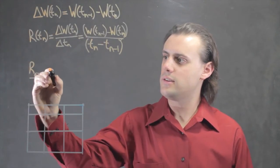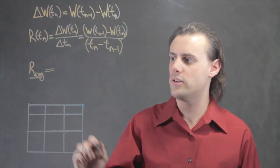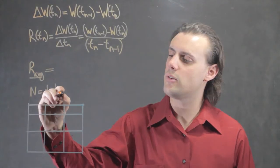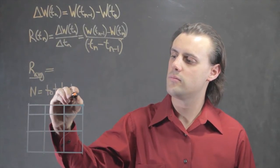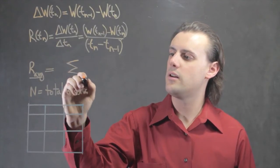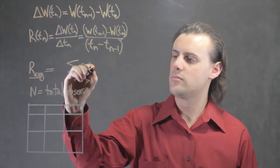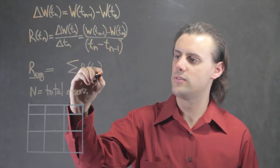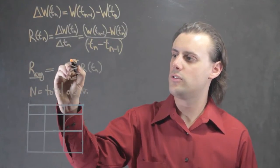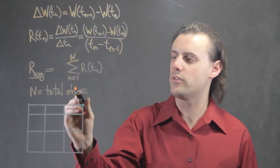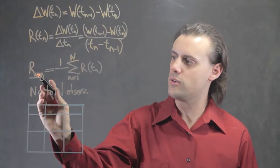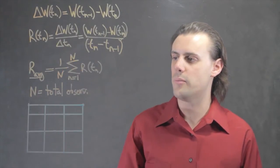By taking all of the data that we collect from a total of n total observations, or measurements, we sum up all the different rates, R as a function of Tn, where n goes from 1, meaning the first observation, to big N, which is the total number of observations. And to normalize this, such that we can calculate this average, we divide by the total number of observations.